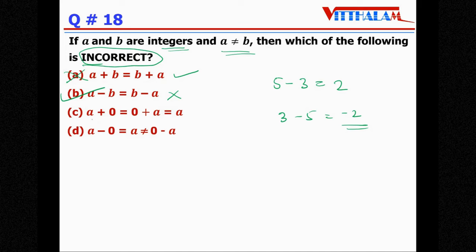Let's check just for understanding. A plus 0 equals to 0 plus a equals to a, correct. A multiply by 0 equals to 0, here a minus 0 equals to a correct, which is not equals to 0 minus a correct, that is what here. So c and d is not the answer, answer is b.